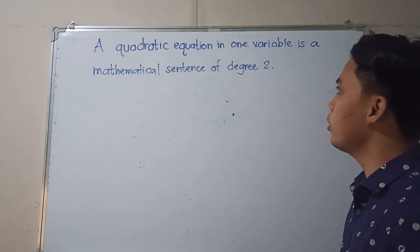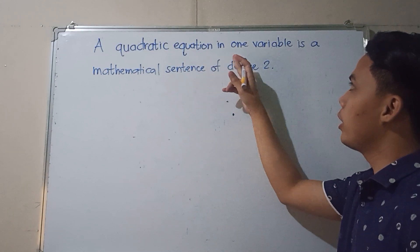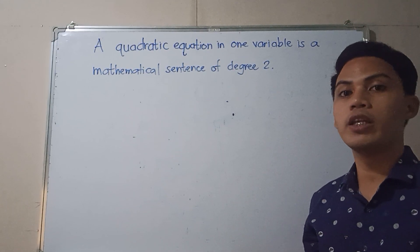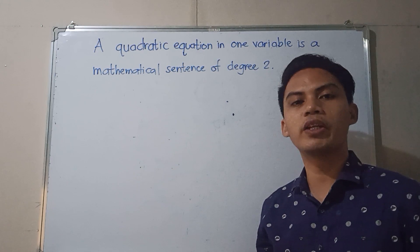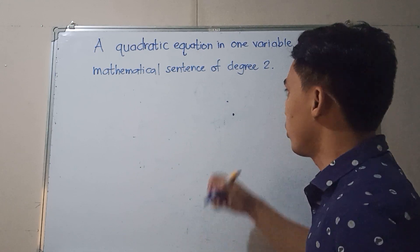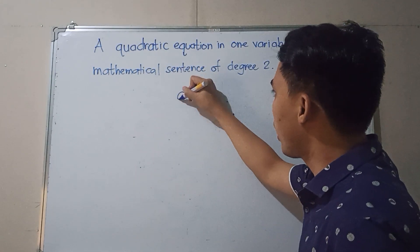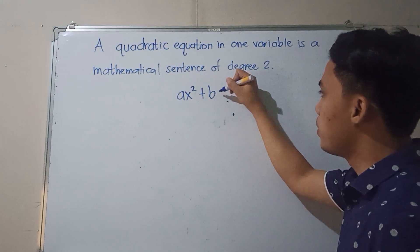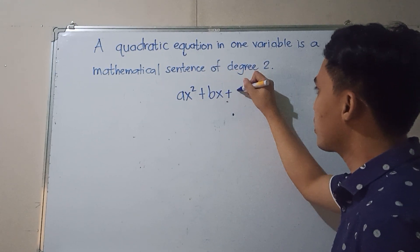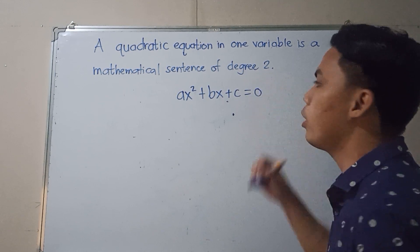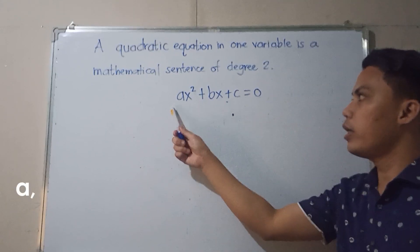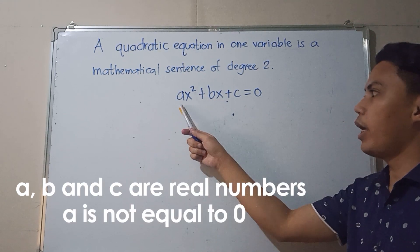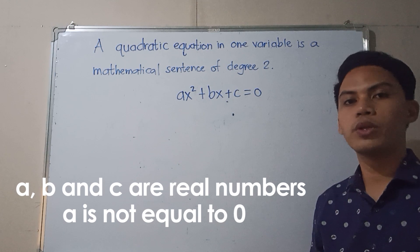We define quadratic equation: a quadratic equation in one variable is a mathematical sentence of degree 2. A quadratic equation can be written in standard form as Ax squared plus Bx plus C is equal to 0, where A, B, and C are real numbers and A is not equal to 0.